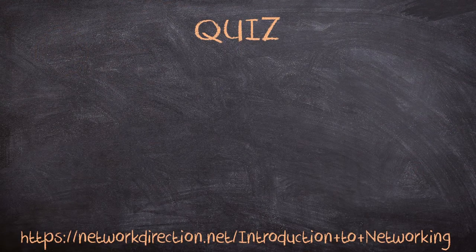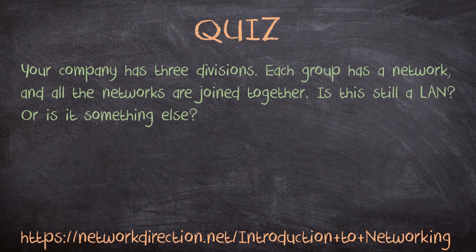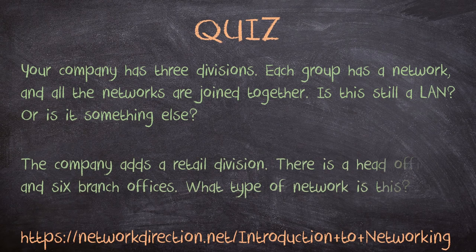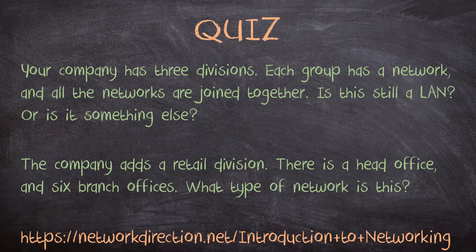Here's something to think about. You work for a company that has a finance division, an engineering division, and an admin division. Each group has their own network and the networks are joined together — is this network still a LAN, or is it something else entirely? The company then grows and adds a retail division, and in addition to the head office there are now six branch offices. What type of network is this? Go to the link below to see the answers.